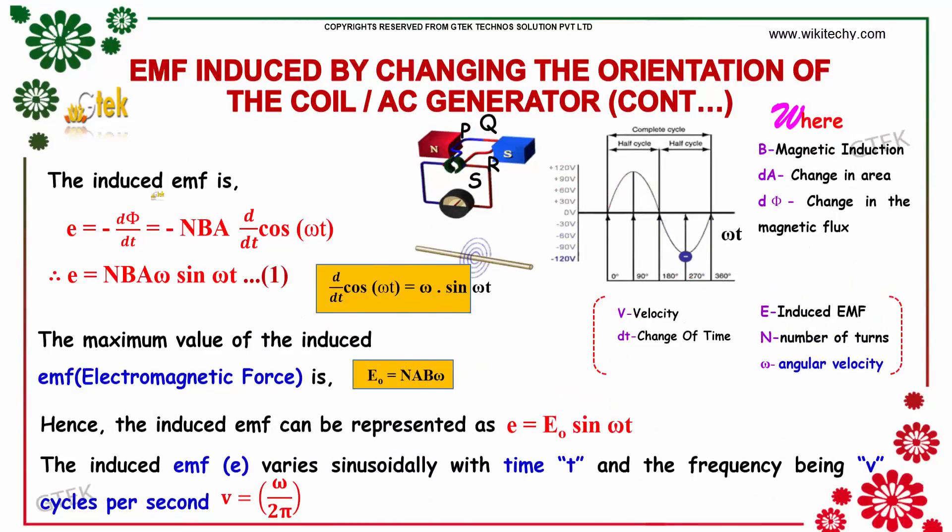For the moving, the induced EMF is given by E equals minus d phi by dt equals minus NBA into d by dt of cos omega t. Since d by dt of cos omega t equals minus omega sin omega t, you will be getting the induced EMF as E equals NBA omega into sin omega t. The maximum value of the induced EMF is given by when sin omega t is 1, so NBA omega. Hence, the induced EMF can be represented as E equals E0 sin omega t.